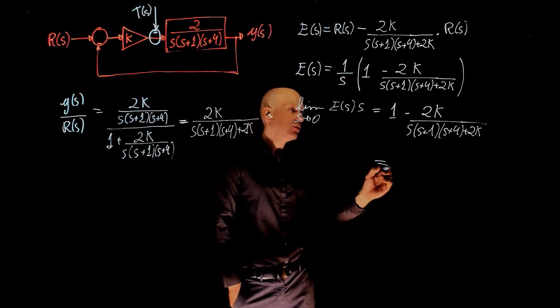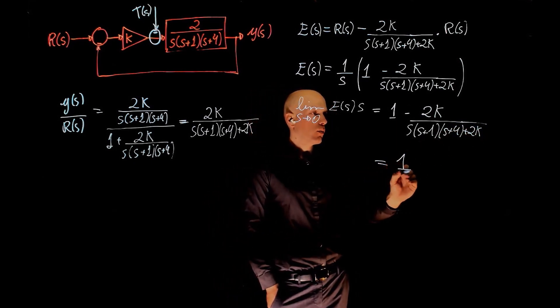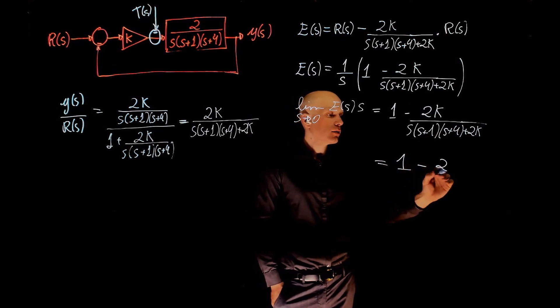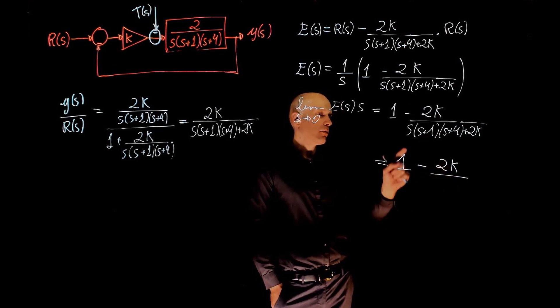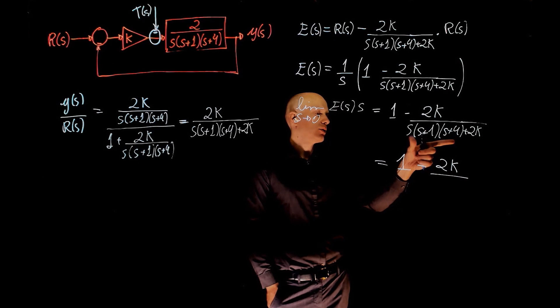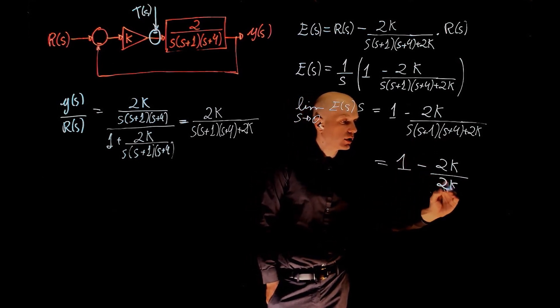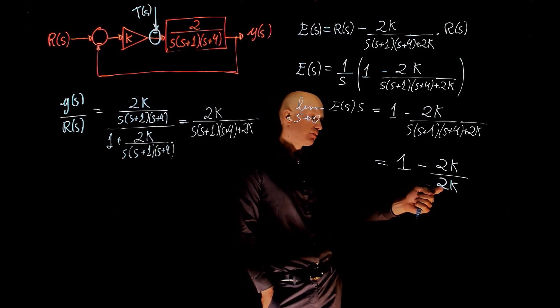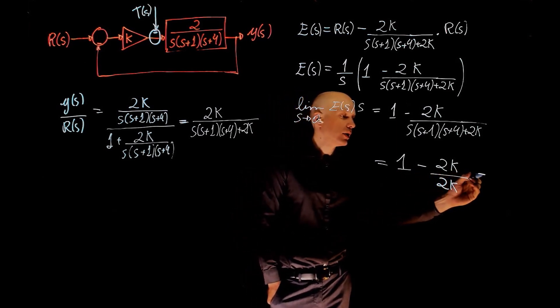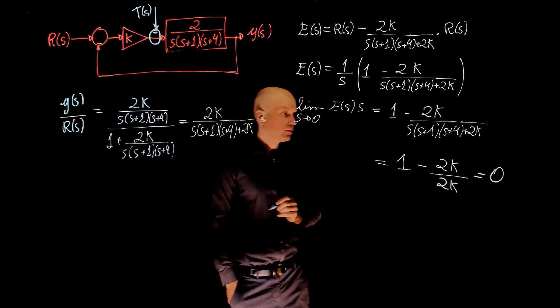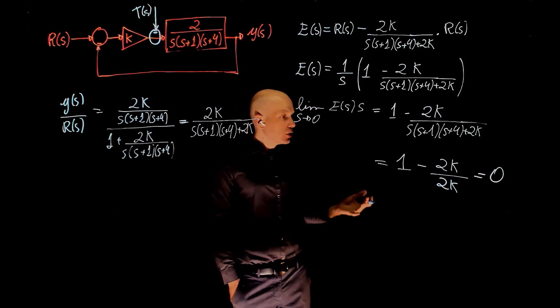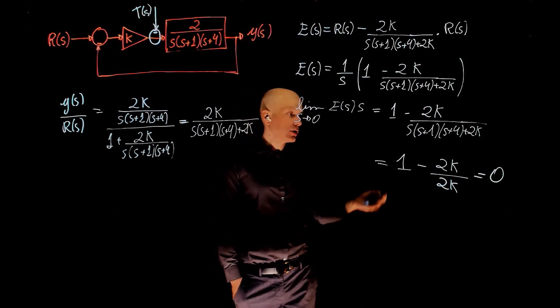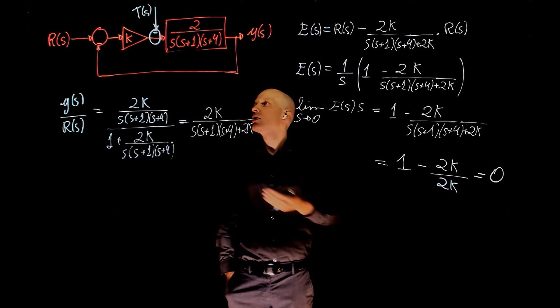When S tends to 0, we get 1 minus 2K divided by, if this S is 0, this entire term is 0. We are left with 2K. 2K divided by 2K is 1. 1 minus 1 is 0. So good news, the steady state error is 0 for all values of K.